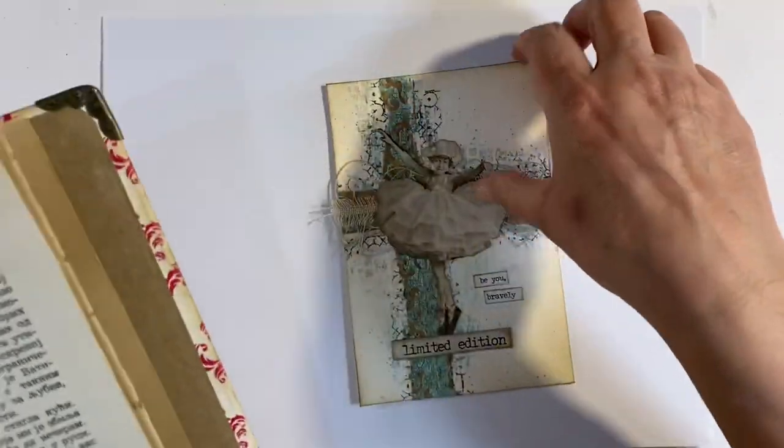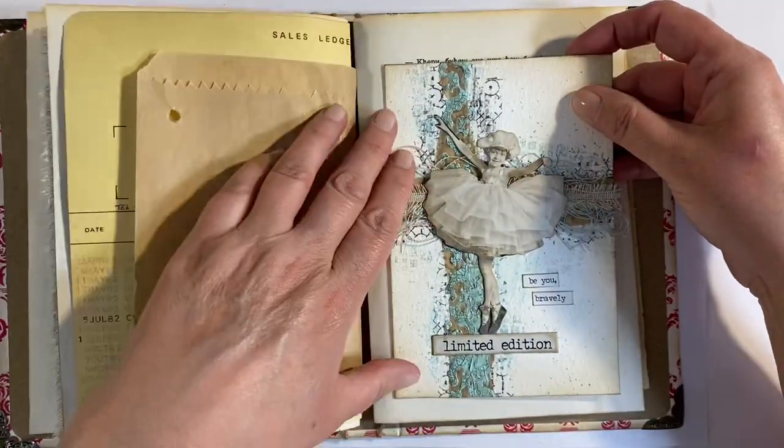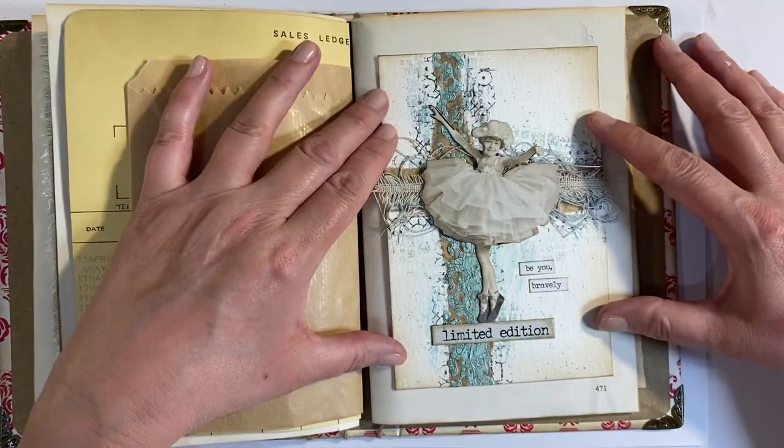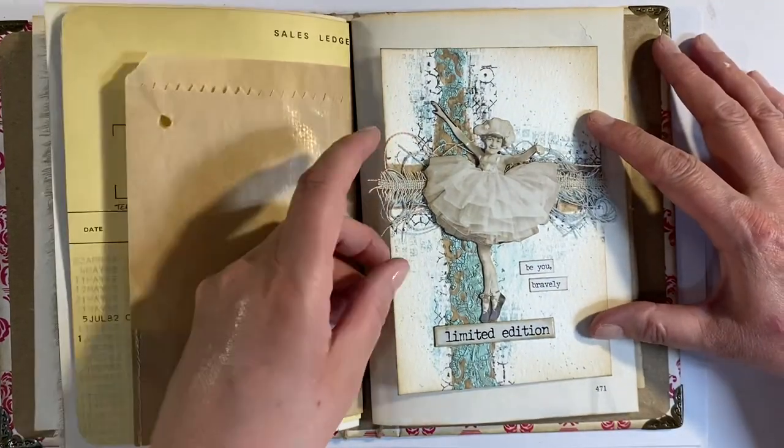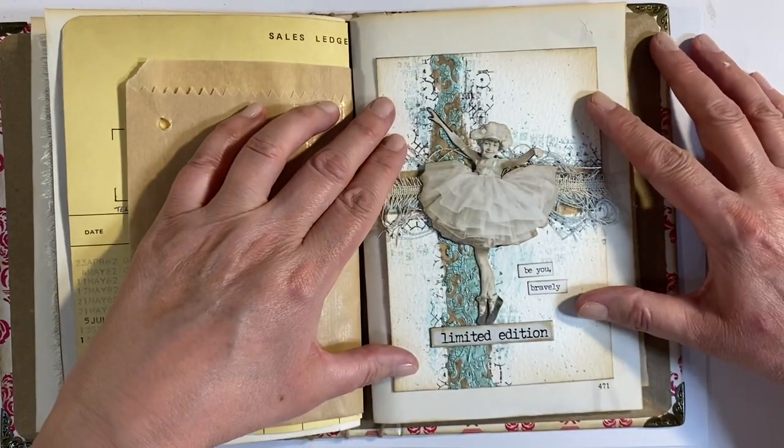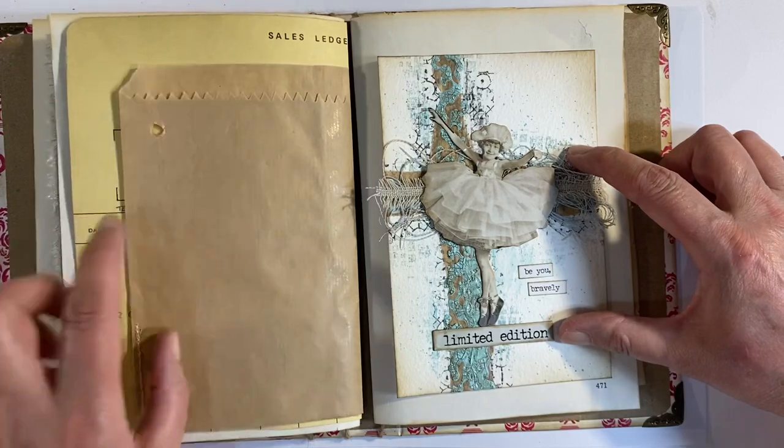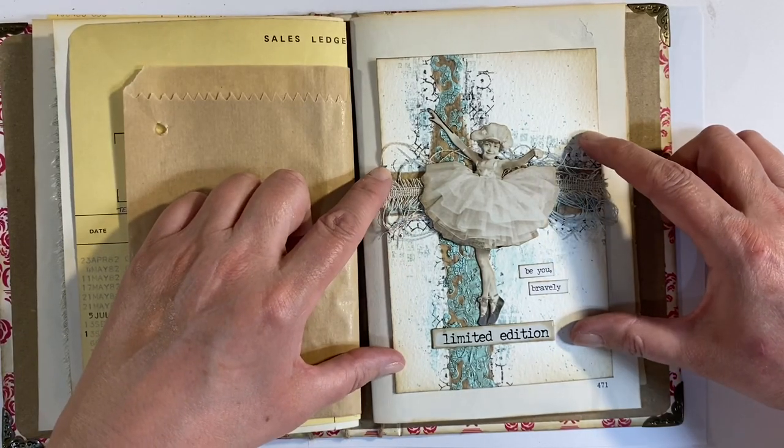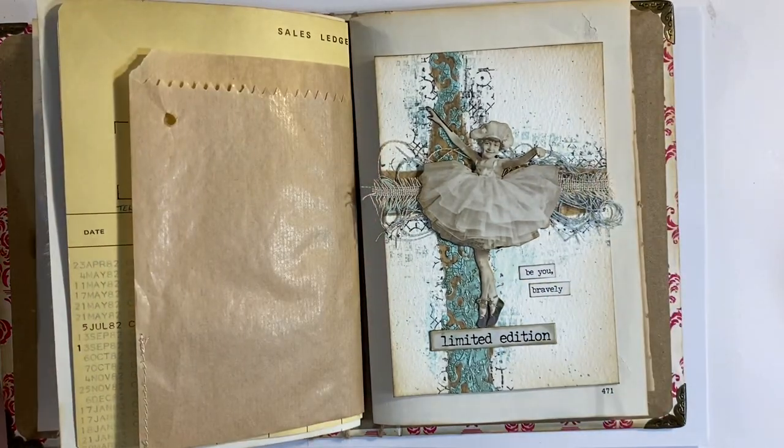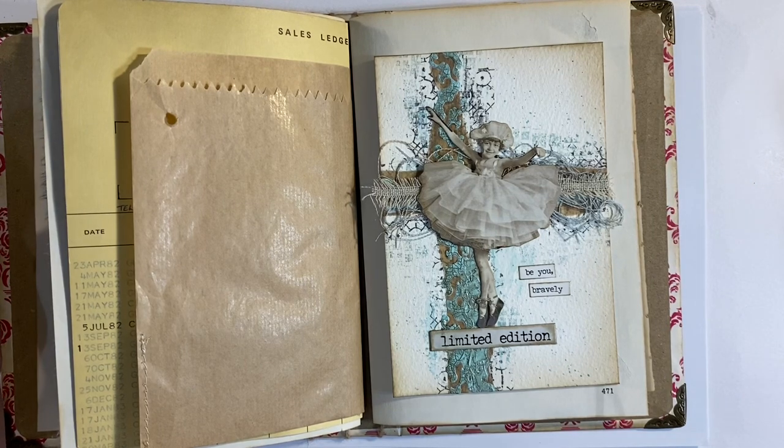I have done something similar to this in the past, about four or five years ago when we did the art journal prompts. But I'm really happy with this. I have decided that I'm going to add it to this page here in my journal. I know that I'm covering up the book text, but I like having the page number at the bottom. And I think it goes really well next to the paper bag as well. And so that is my finished page for today.